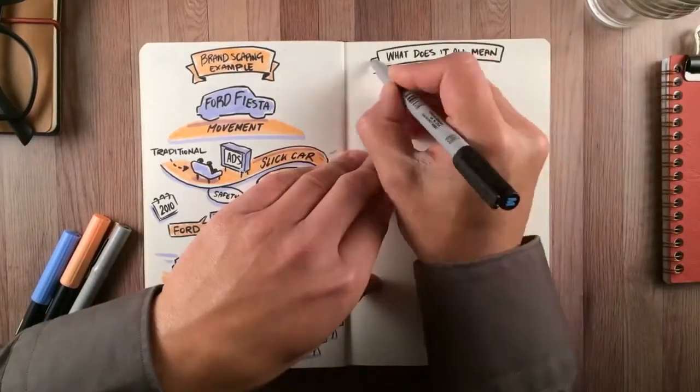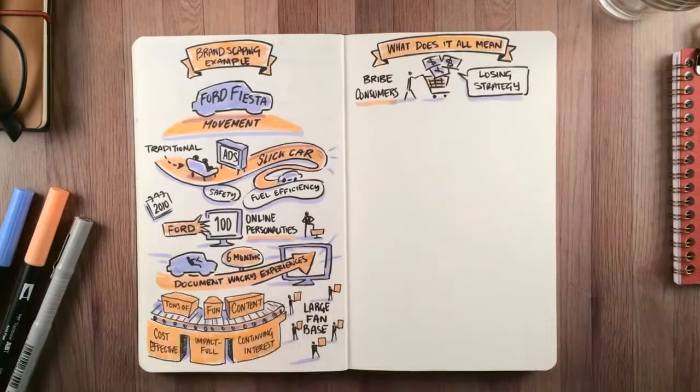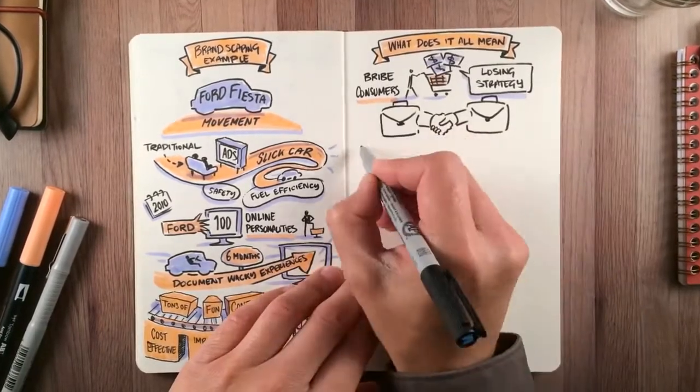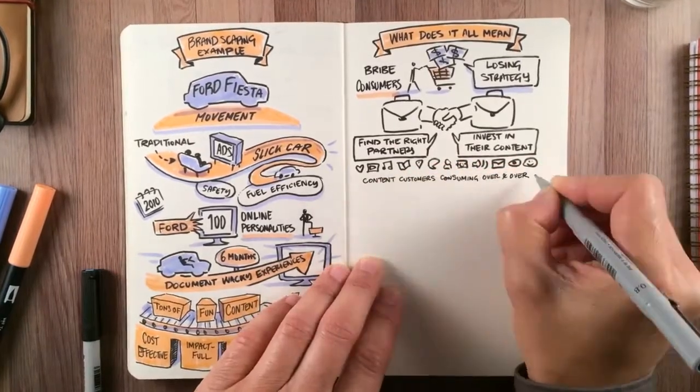What does it all mean? Spending money to bribe consumers is a losing strategy. Instead, invest by finding the right partners and invest in their content. Content your customers are already consuming over and over.